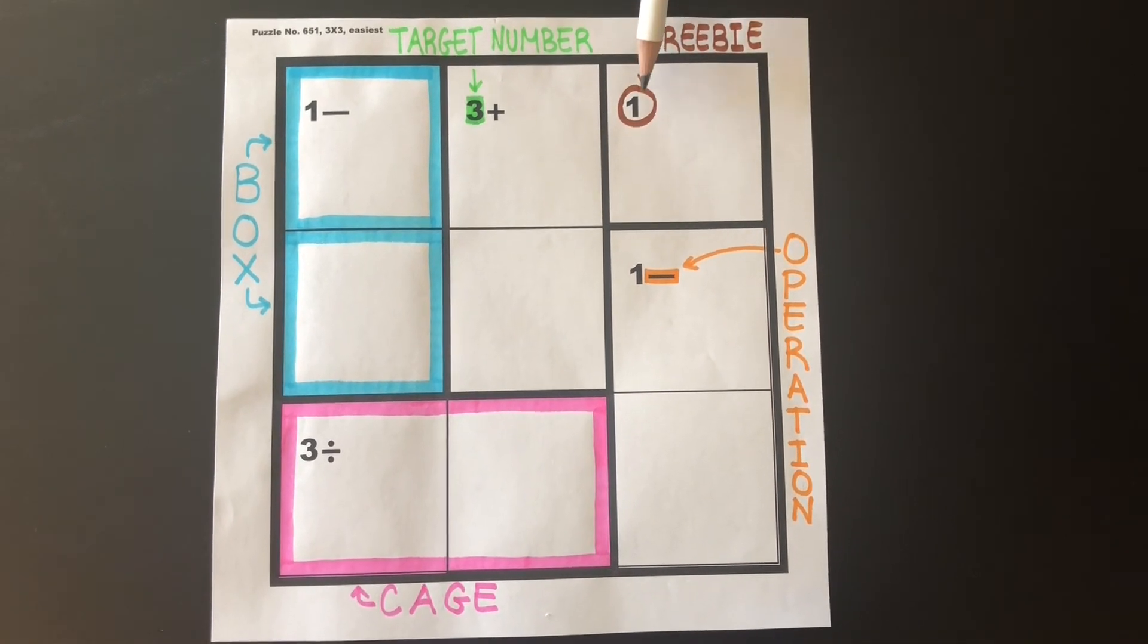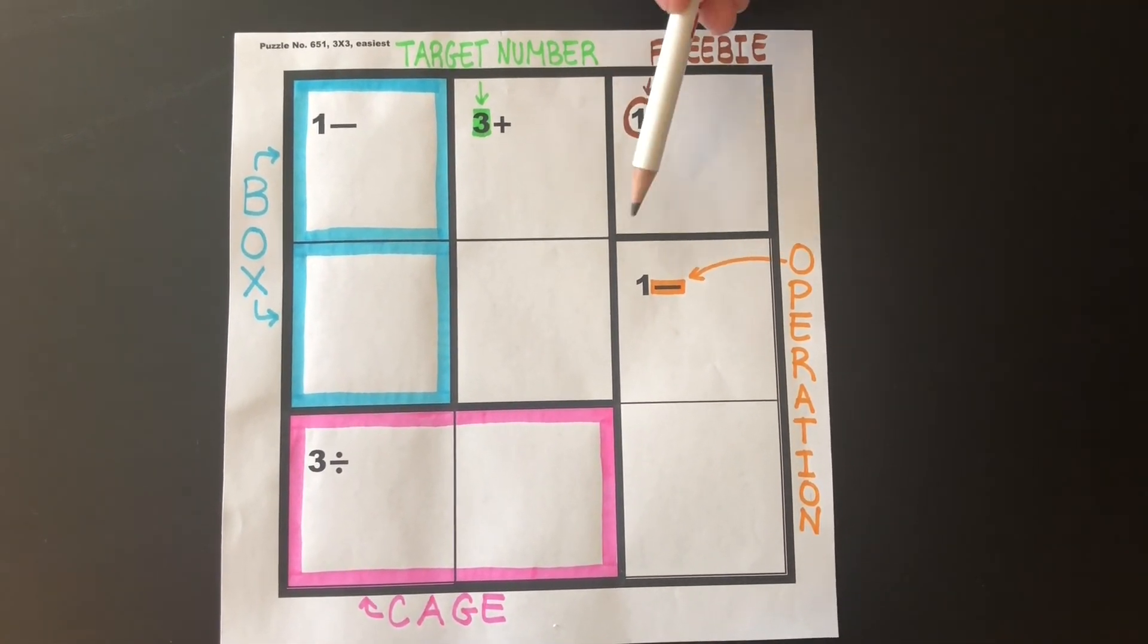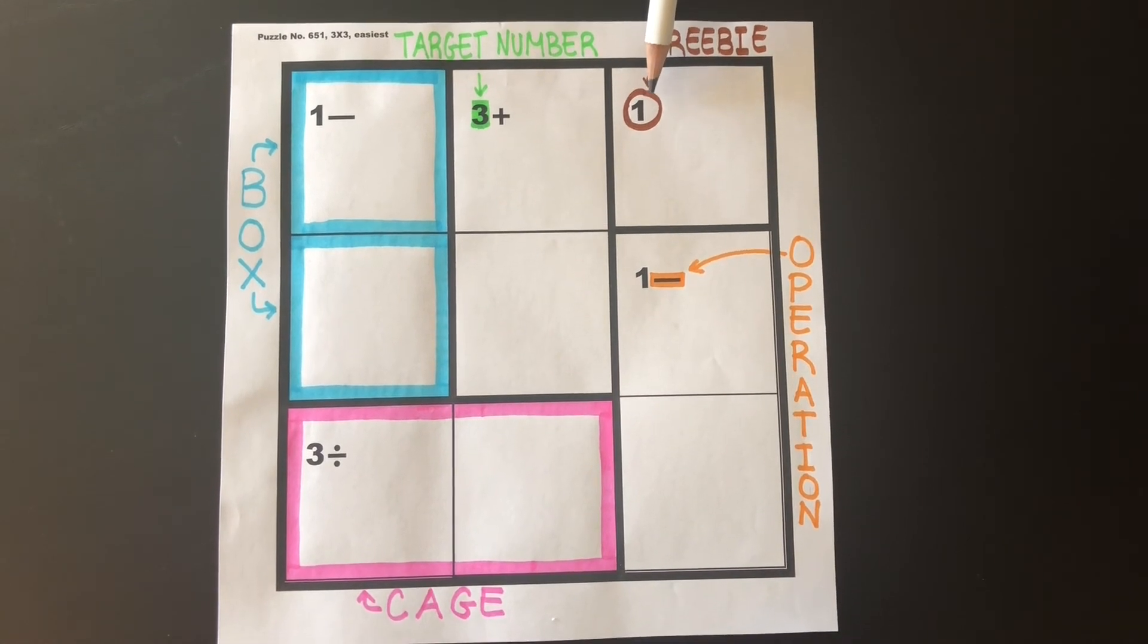A freebie is a cage with one box that only contains a target number.